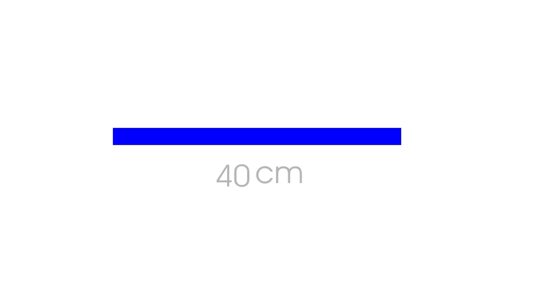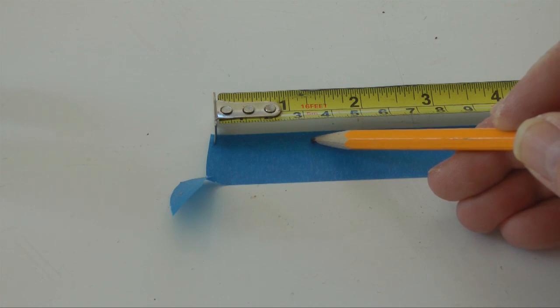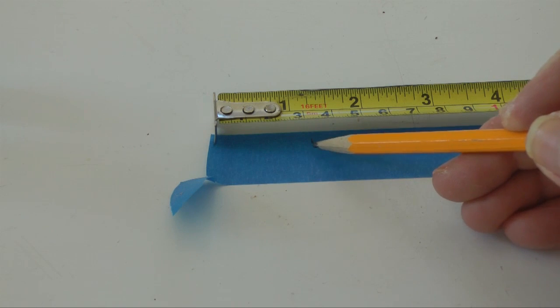My tape is 40 centimeters long. 40 divided by 12 gives us 3.3 centimeters. Starting at one end, I will make dots spaced 3.3 centimeters apart.